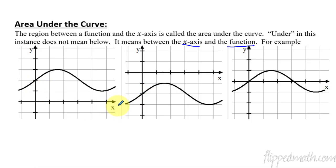So, for example, here I have the x-axis. Here is this curve, this function curve, and we shade this region right here. This would be considered the area under the curve. So, the area from the curve to the x-axis.